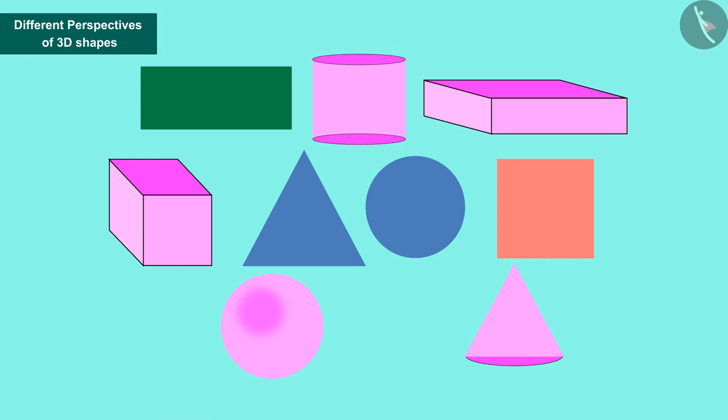Perfect! These shapes are rectangle, cylinder, cuboid, cube, triangle, circle, square, sphere, and cone.